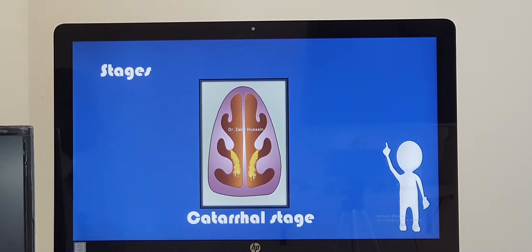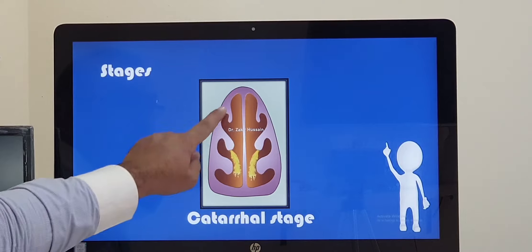This condition is seen in stages starting from the catarrhal stage. In this stage, the main finding will be thick mucoid discharge from nasal cavity. We call it carpenter's glue, very thick discharge. And if you can see the structure of the nose, the turbinates are all still normal.